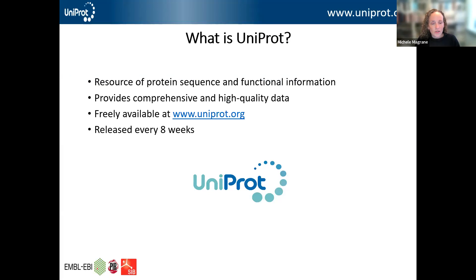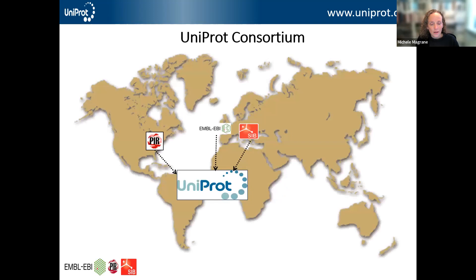UniProt is a resource of protein sequence and functional information, providing comprehensive and high quality protein data. All of the information in UniProt is freely available from the UniProt website at uniprot.org and it's released every eight weeks. UniProt is produced by a consortium made up of groups at EMBL-EBI in the UK, the Swiss Institute of Bioinformatics in Geneva, and the Protein Information Resource at Georgetown University and the University of Delaware in the US.